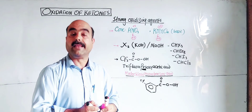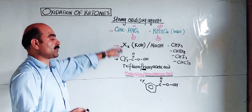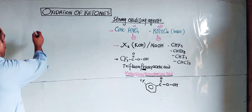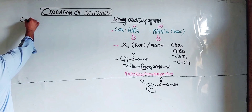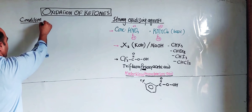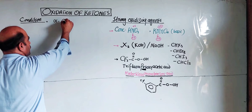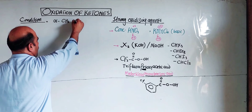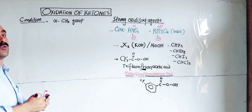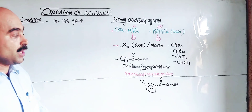These strong oxidizing agents oxidize ketones under specific conditions. An important condition is the alpha position: the alpha carbon is the carbon adjacent to the carbonyl group. If a CH2 group is at the alpha position, it is more easily oxidized compared to others.